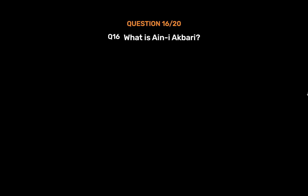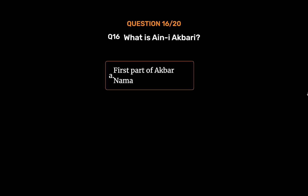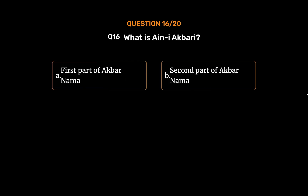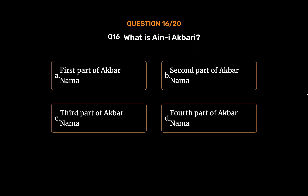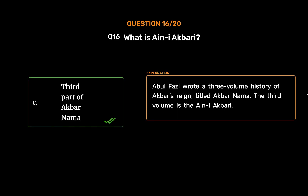Question 16: What is Ain-i-Akbari? Option A: First part of Akbar Nama. Option B: Second part of Akbar Nama. Option C: Third part of Akbar Nama. Option D: Fourth part of Akbar Nama. The correct answer is Option C, Third part of Akbar Nama. Abul Fazl wrote a three-volume history of Akbar's reign titled Akbar Nama. The third volume is the Ain-i-Akbari.